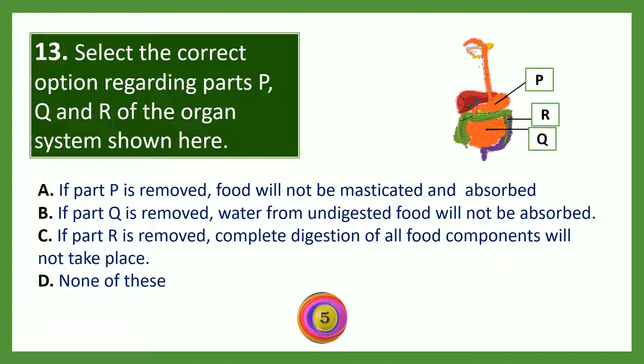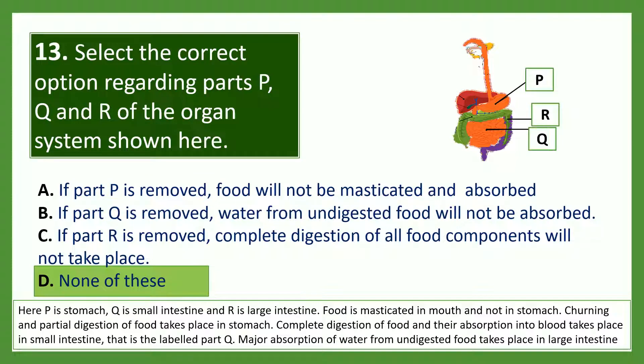Select the correct option regarding parts P, Q, and R of the organ system shown. Option A — if part P is removed, food will not be masticated and absorbed; option B — if part Q is removed, water from undigested food will not be absorbed; option C — if part R is removed, complete digestion of all food components will not take place; option D — none of these. The answer is none of these. Here P is the stomach, Q is the small intestine, and R is the large intestine. Food is masticated in the mouth, not the stomach. Churning and partial digestion take place in the stomach. Complete digestion and absorption into blood takes place in the small intestine (Q). Major absorption of water from undigested food takes place in the large intestine.